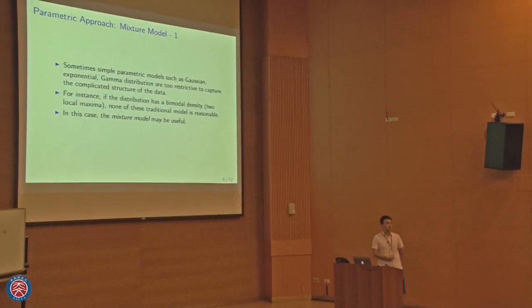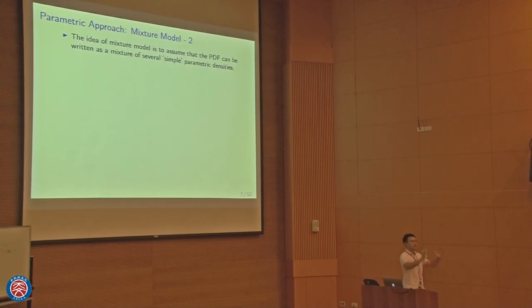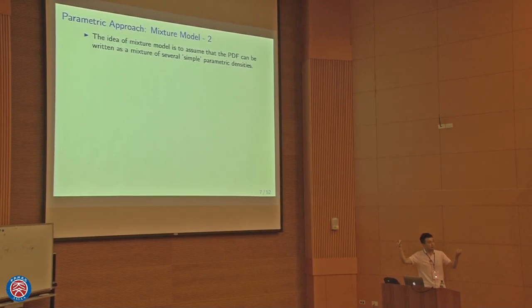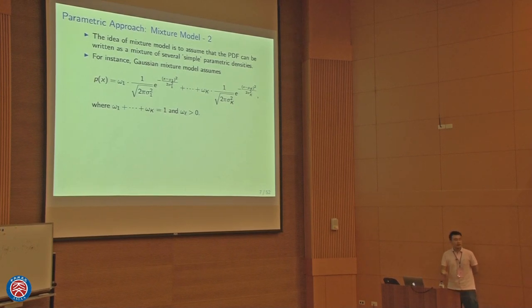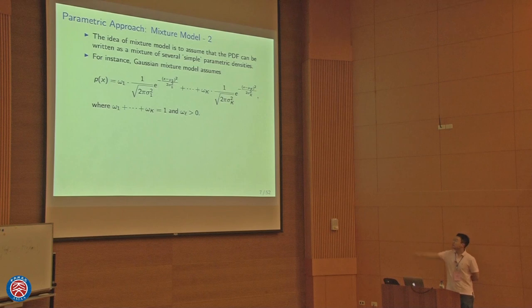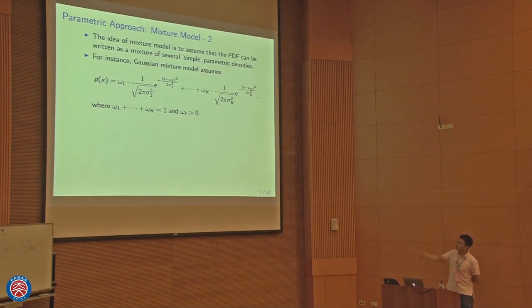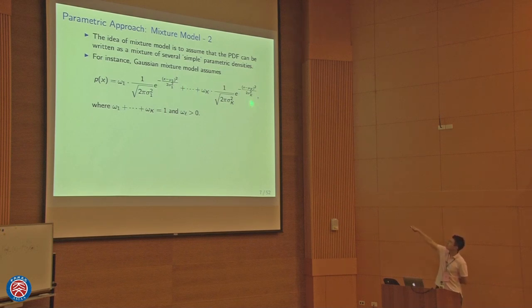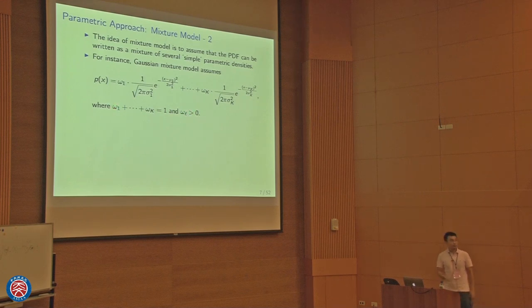To solve this problem while keeping a parametric model, people proposed the mixture model. The idea is that the density function can be written as a mixture of different parametric densities. In the Gaussian mixture model, the PDF can be written as omega-1 times the first Gaussian with mean mu-1 and variance sigma-1 squared, plus ... plus omega-K times the K-th Gaussian. This is a K-component Gaussian mixture model, where omega must be greater than zero and all omegas sum to one — representing the proportion of each Gaussian component.